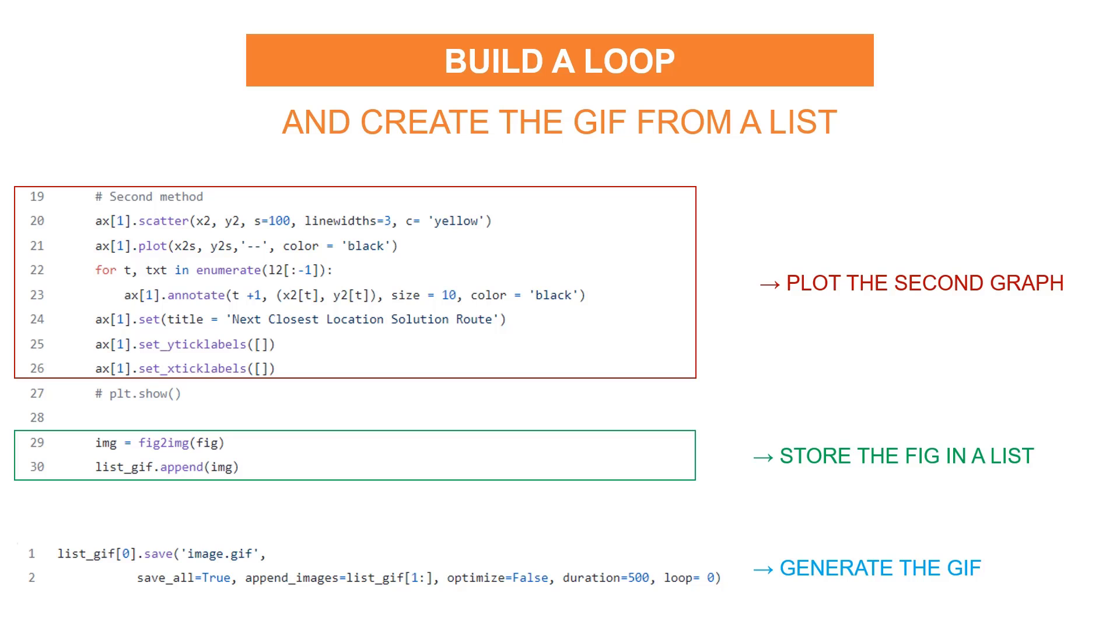And finally, you can use the list to generate the animated GIF. You basically take the first element of the list and you append it to the rest. You can change the duration. You can also fix the number of loops. If zero, it means that you have an infinite loop. And finally, you can save it locally.